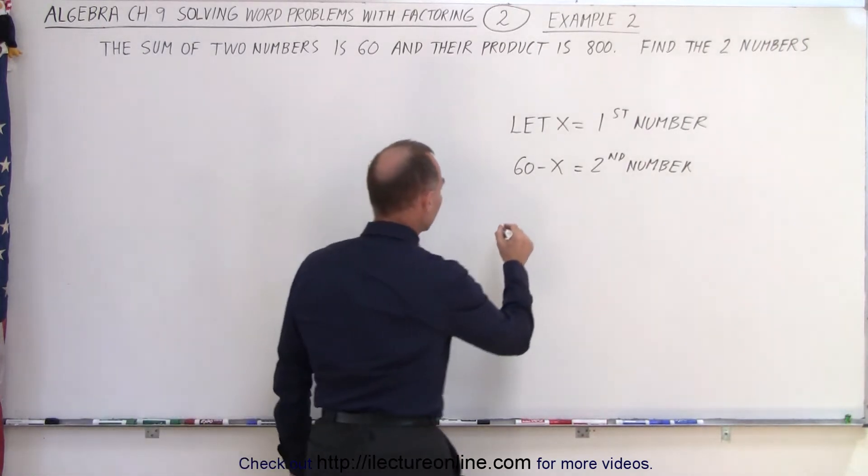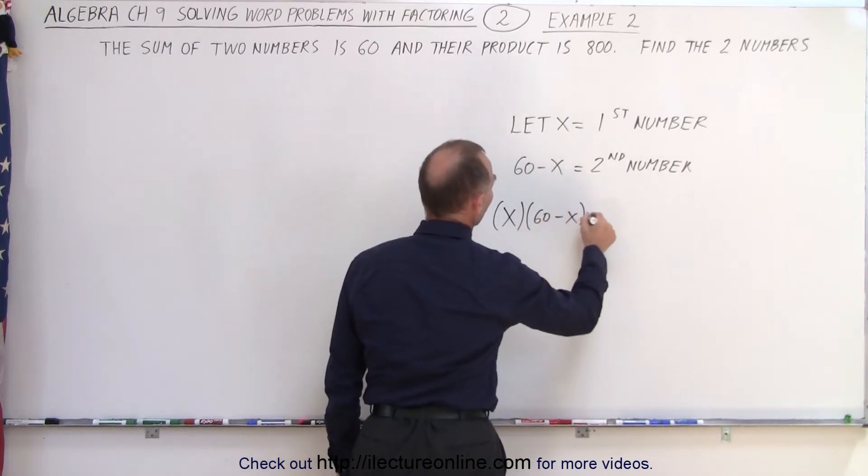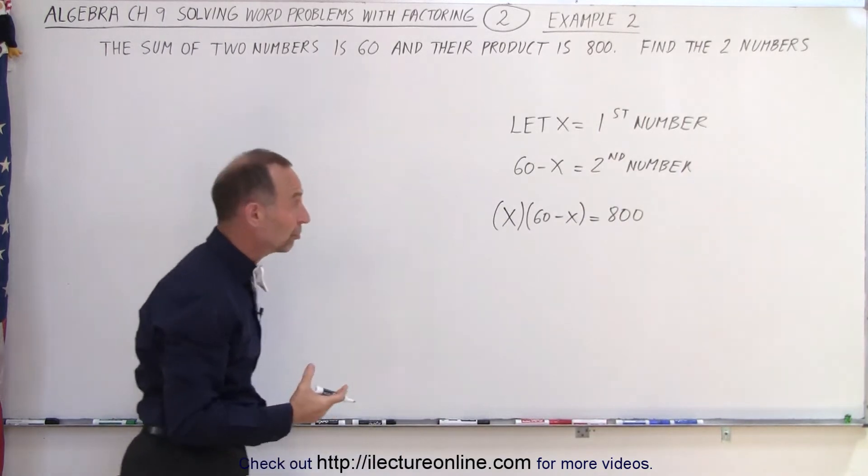800, which means that the first number, x, times the second number, 60 minus x, must equal 800. And here we have our quadratic equation that we must solve.